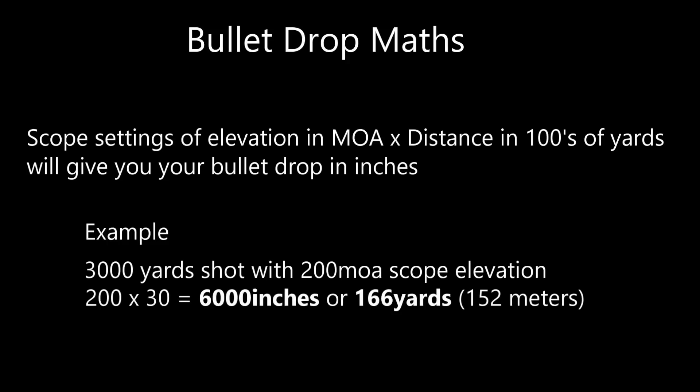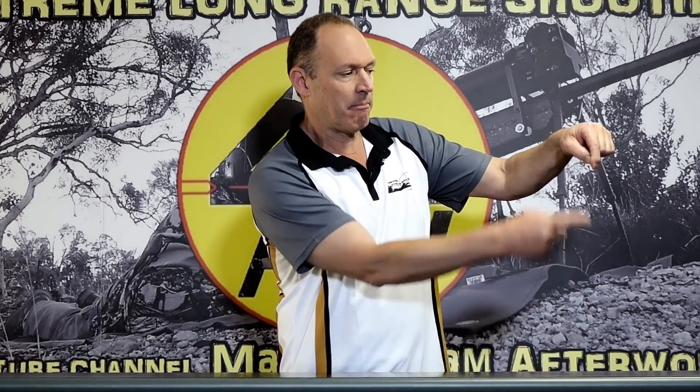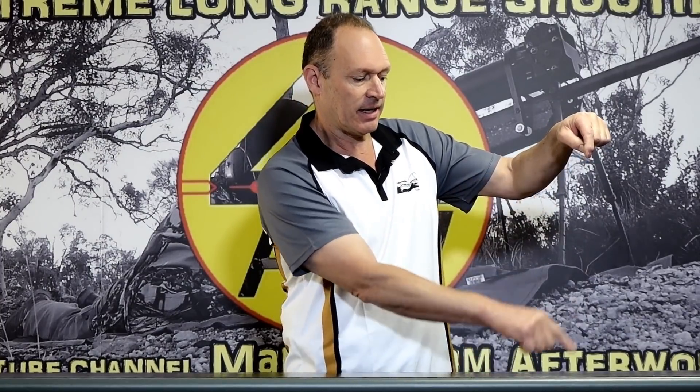What bullet drop is actually describing: if you look at the trajectory of the barrel — whether it's pointing slightly up or a long way up — that dead straight line of the bore sight, where the barrel was pointing, and then you intersect a point immediately above the target, that distance there is what bullet drop is.